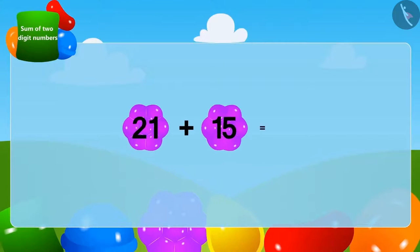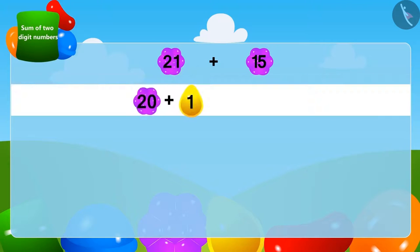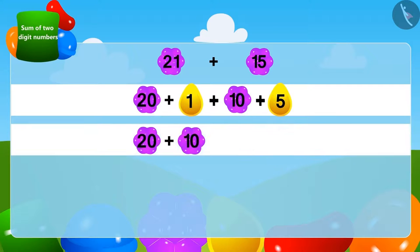Let's learn one more method of adding two-digit numbers quickly. We can write 21 by adding 1 and 20 like this. And in the same way, 15 can be written by adding 5 and 10. Now, we will write two-digit numbers together and one-digit numbers together like this. Now, we will add the two-digit numbers. Add 10 to 20 and it becomes 30.